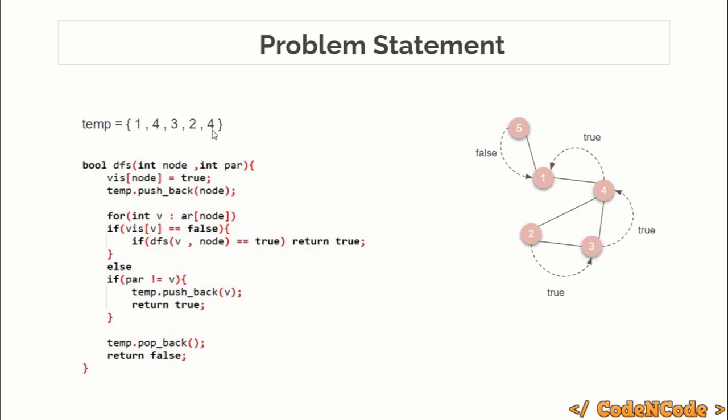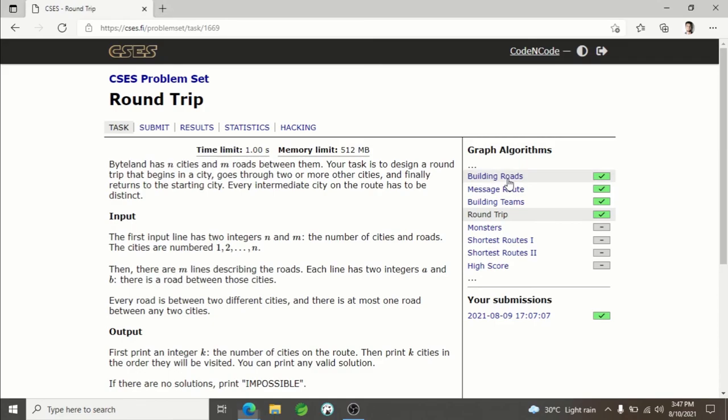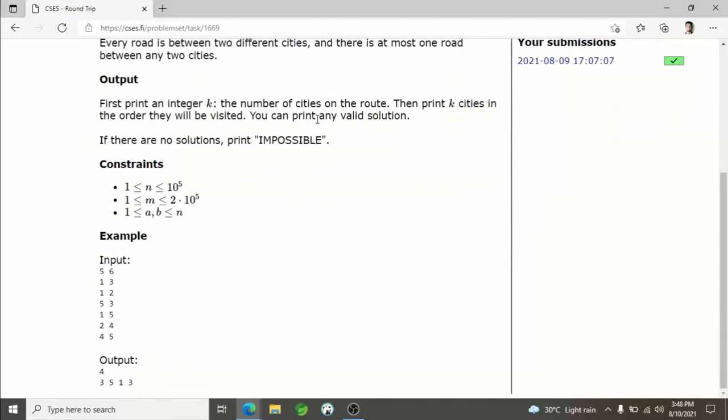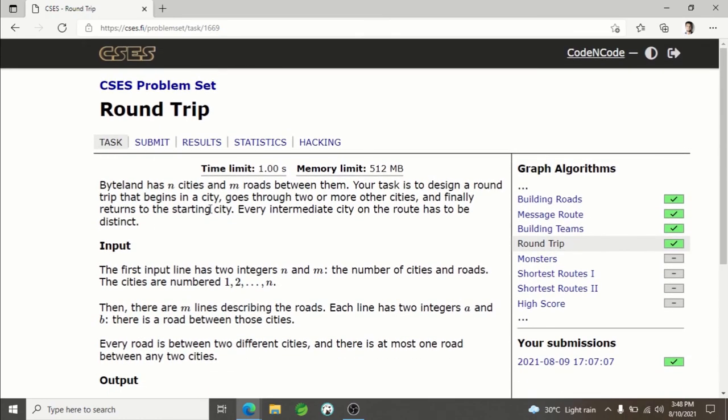Finally a problem where you can implement the algorithm that you have just learned is this. I'll be providing the link of this problem in the description of the video. The problem is from CSES called Round Trip. This is exactly asking the thing that we have just learned. Given a graph, you have to find whether there exists a cycle or not. If it doesn't exist, print impossible, otherwise find any one cycle and print the length of it and the cycle itself. I'll be providing the link in the description so you can solve that problem and see whether you have learned this technique.